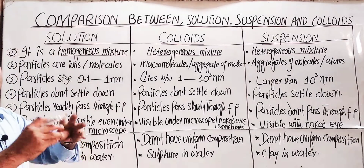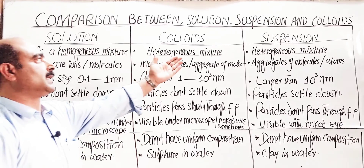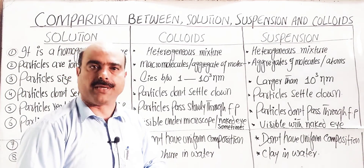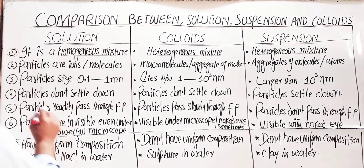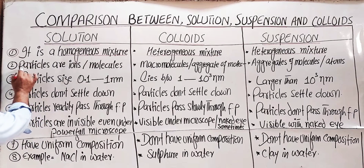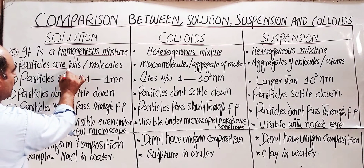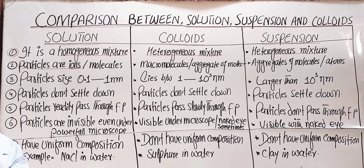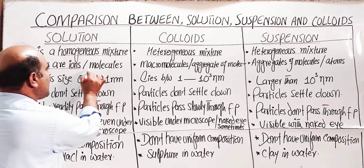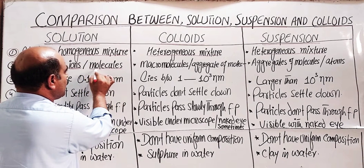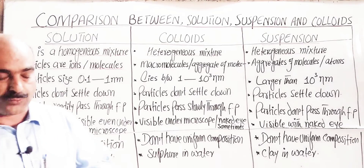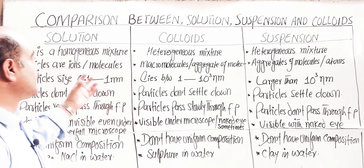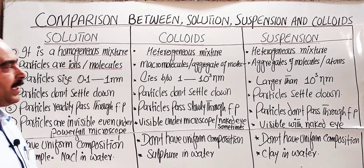In a solution, the solute dissolves in the true sense. In suspension and colloids, it dissolves by shaking, not in the true sense. In solution, particles are ions — for example, sodium chloride in water gives sodium ions and chloride ions — or molecules, like glucose or sucrose dissolved in water giving glucose molecules or sucrose molecules.